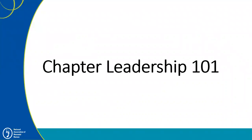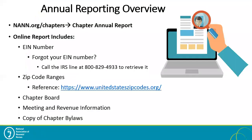Our first topic today is chapter annual reports. Each chapter is required to fill out an annual report form online and to also submit a receipt of their 990N or 990 tax return on an annual basis. The annual report is listed on our chapter website at NAN.org/chapters. The online report will ask for a number of required fields, including your chapter's EIN number. If you can't locate your chapter's EIN number, please contact the IRS at 1-800-829-4933 to retrieve it.